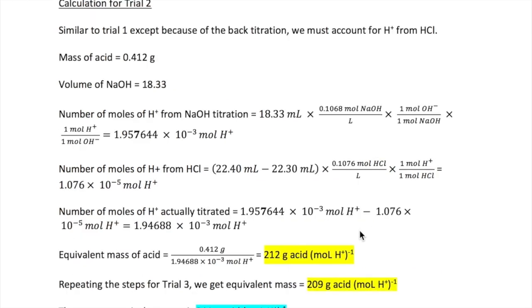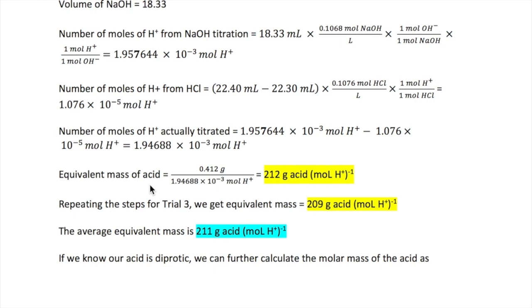For trial two, it's a bit more complicated, because there's a back titration. Basically, you're going to start with the same two numbers, the mass of acid and the number of moles of proton from the NaOH titration, but then you're going to have to calculate the number of moles of proton from the HCl back titration, which you can do here by multiplying the volume times the concentration of the HCl. Then, to get the actual number of proton titrated with NaOH to the endpoint, you will subtract the number of moles calculated in step 1, minus the one from step 2. The equivalent mass, again, is just the mass of the acid divided by the number of moles of H+, that you've got here, giving you 212 grams of acid per mole of H+.